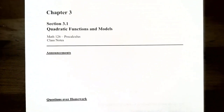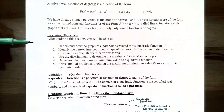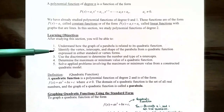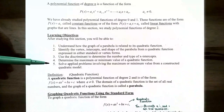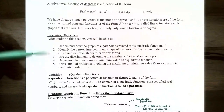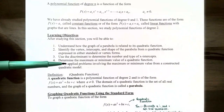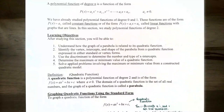Hi everyone, it's Spencer. In this video we're going to finish up our discussion on quadratic functions and models. In the previous video we talked about how to understand the graph of a parabola and how it's related to its quadratic function in standard form, or sometimes called vertex form. We've identified the vertex, intercepts, and shape of the parabola. In this video we're going to talk about how to solve applied problems involving the maximum or minimum value from a constructed quadratic model.